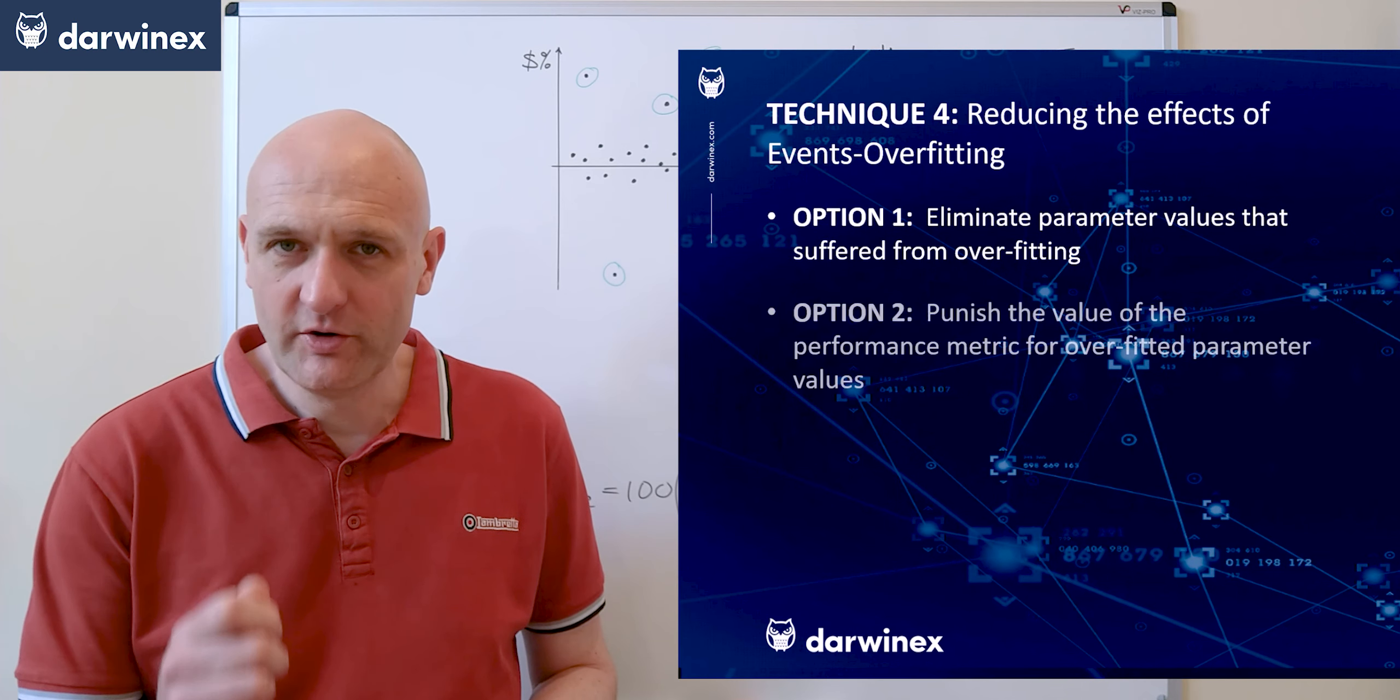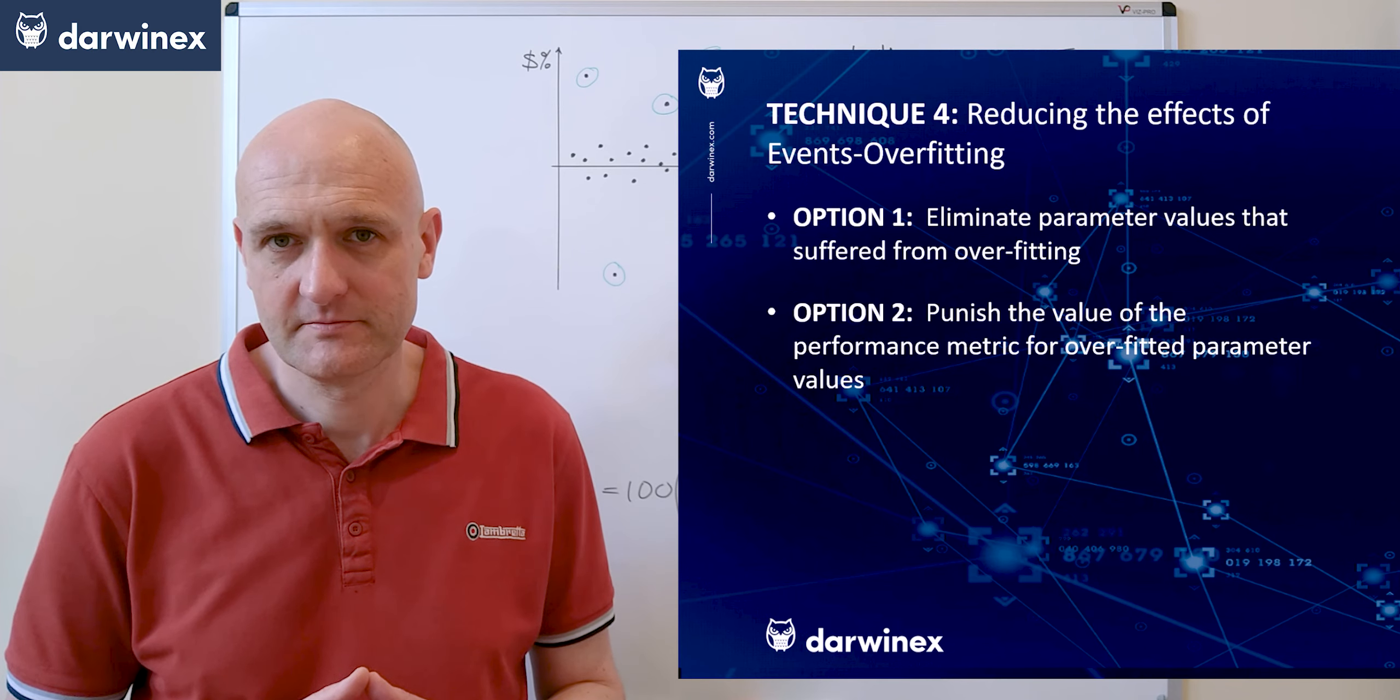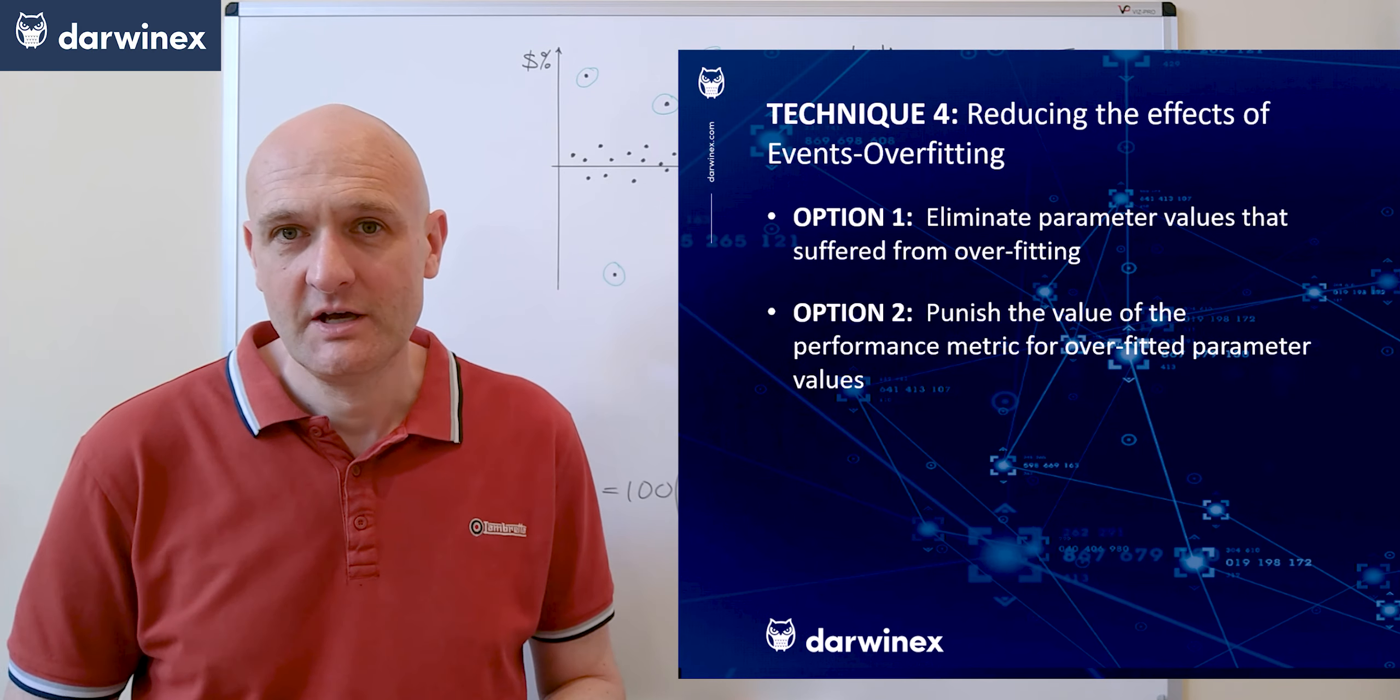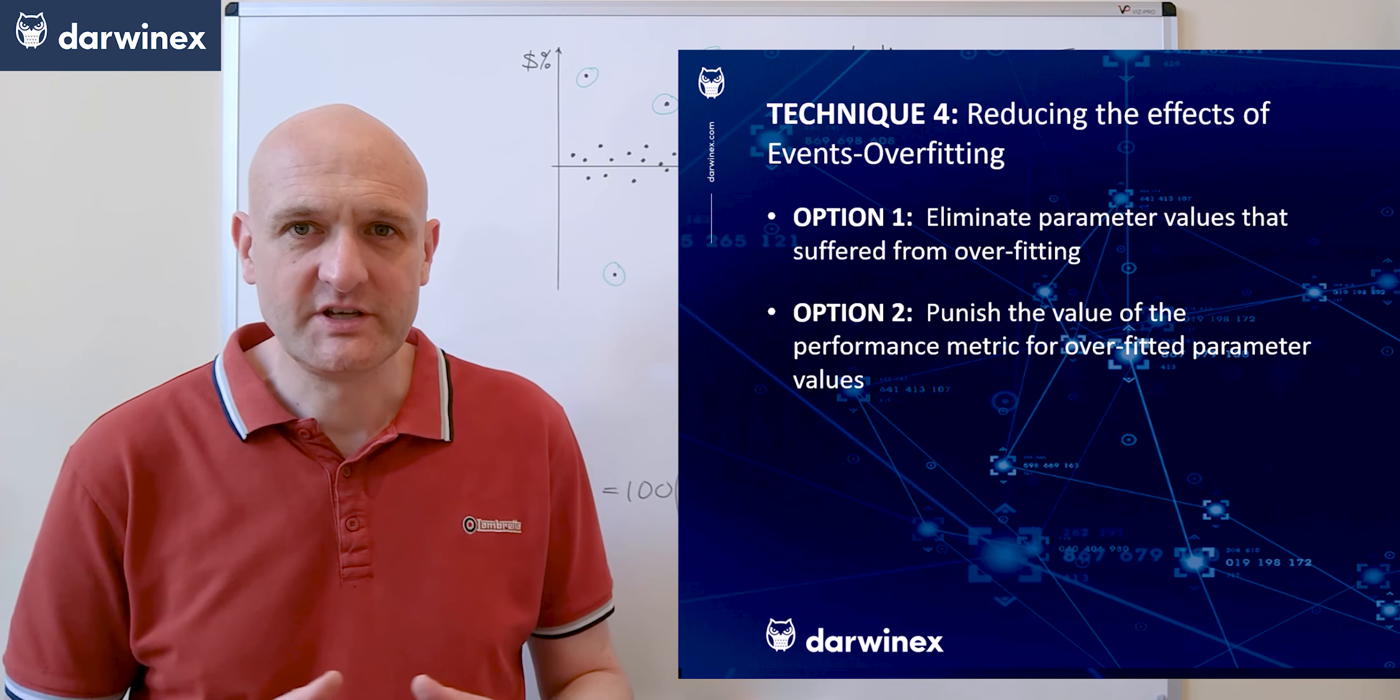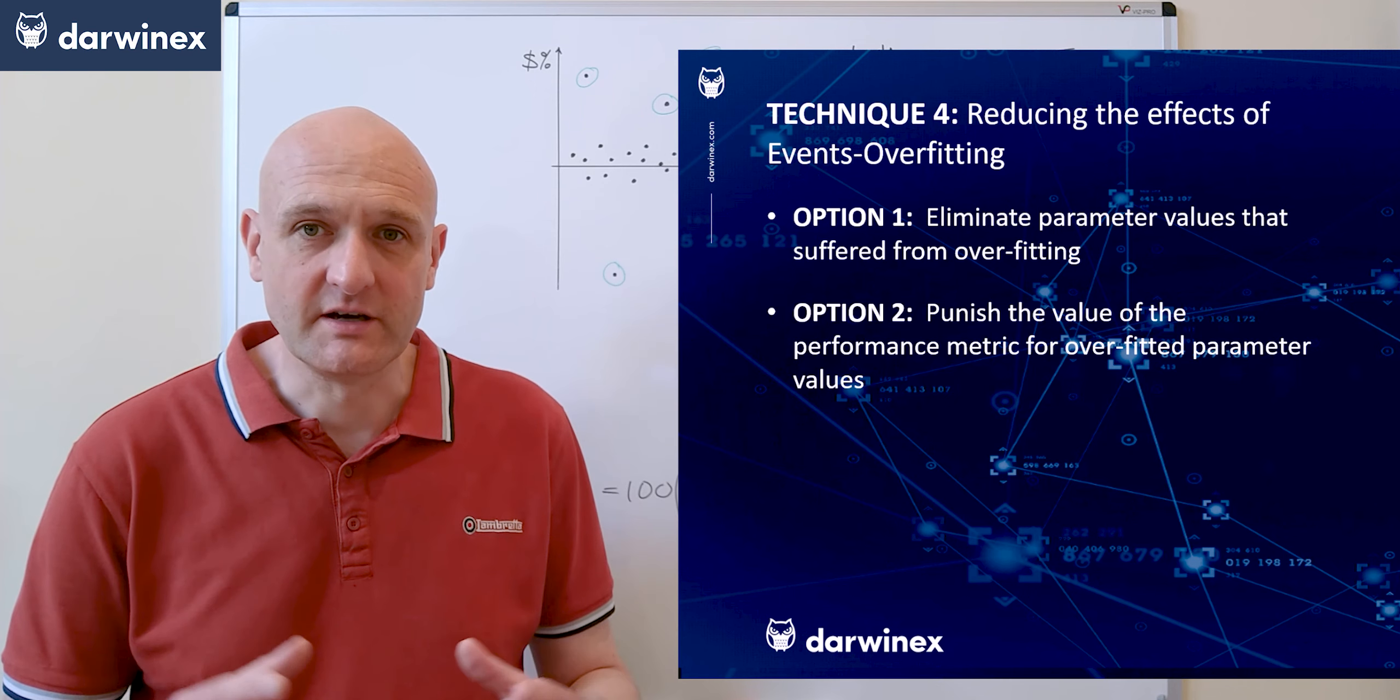Here we punish the performance metric value for overfitted parameter values. In MetaTrader again you would do this in the onTester function but it's something that the majority of backtesting products will also allow you to do. So what would you need to code this time?